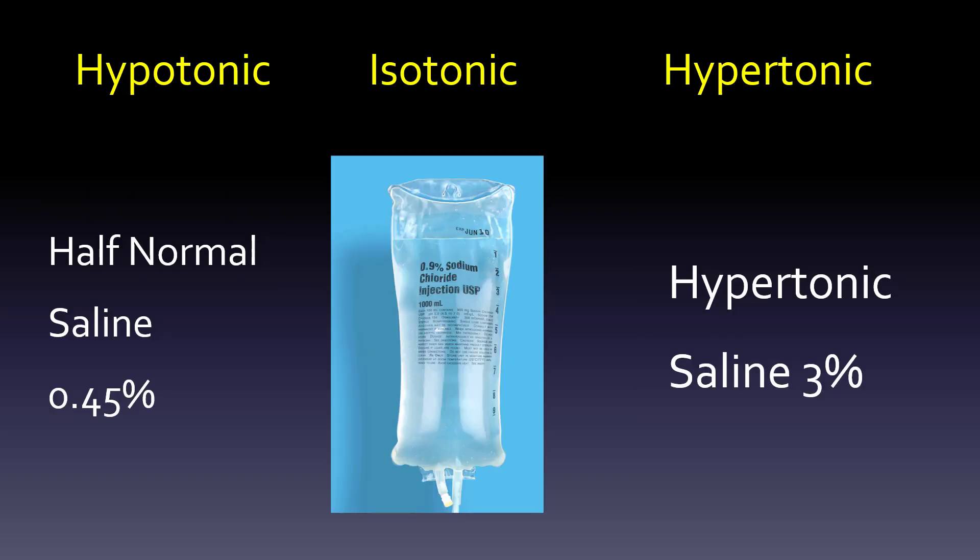We're figuring out what the middle is mathematically. 0.45% half-normal saline is 0.45 over 100. 0.9% sodium chloride is 0.9 over 100. Hypertonic saline is 3 over 100. The most important thing to know: 0.9% is isotonic, 0.45% half-normal is hypotonic, and 3% saline is hypertonic.